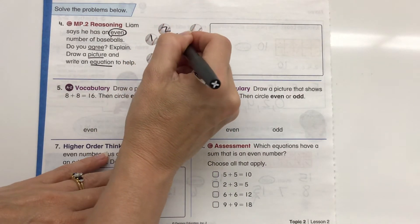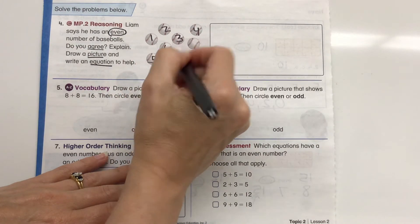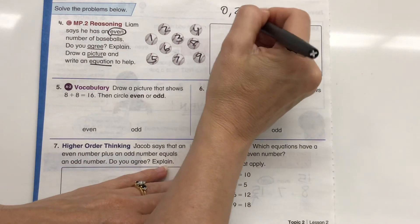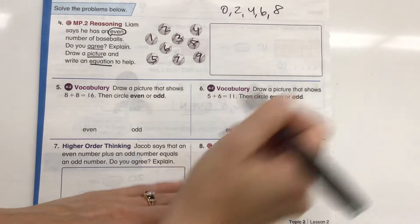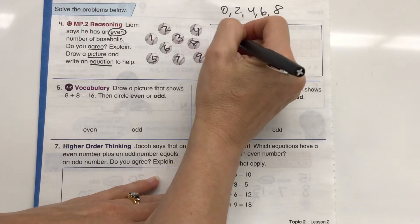So let's count how many balls he has. 1, 2, 3, 4, 5, 6, 7, 8, 9. Hang on. Is it 0, 2, 4, 6, 8? Who do we appreciate? Even numbers? No. So do we agree? No.